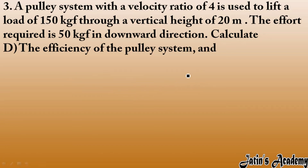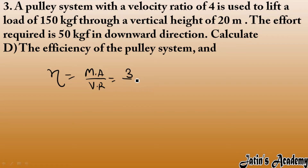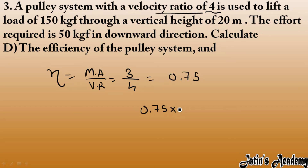Next, we calculate efficiency. Efficiency equals mechanical advantage divided by velocity ratio. Mechanical advantage is 3 and velocity ratio is 4, so efficiency equals 3 divided by 4, which is 0.75. Converting to percentage, efficiency is 75%, meaning some friction is present in the system.